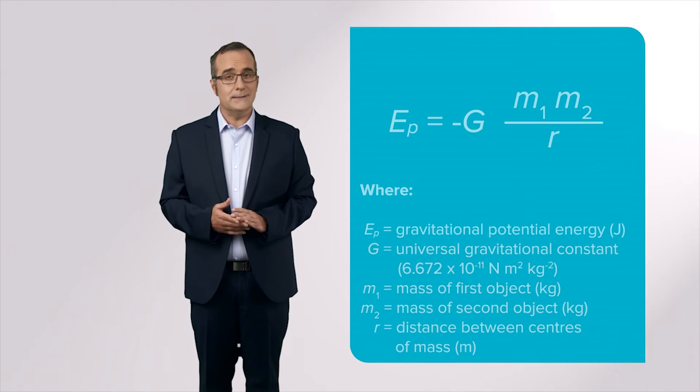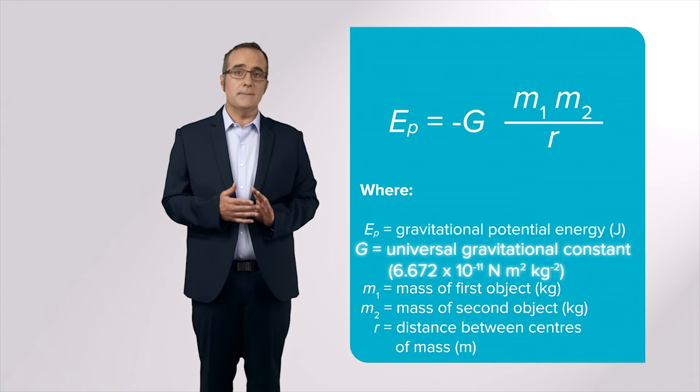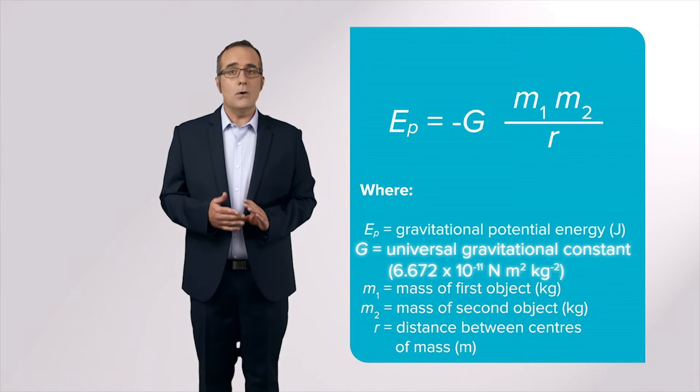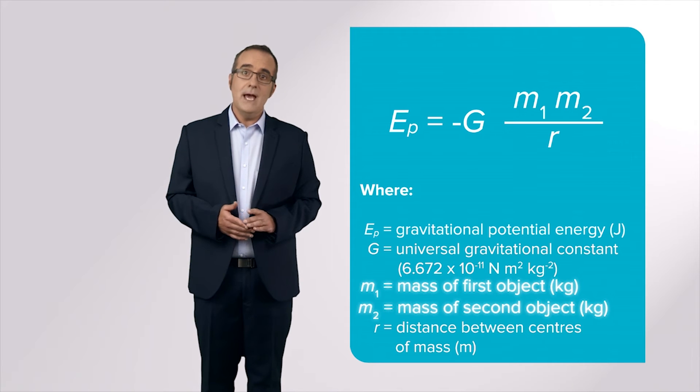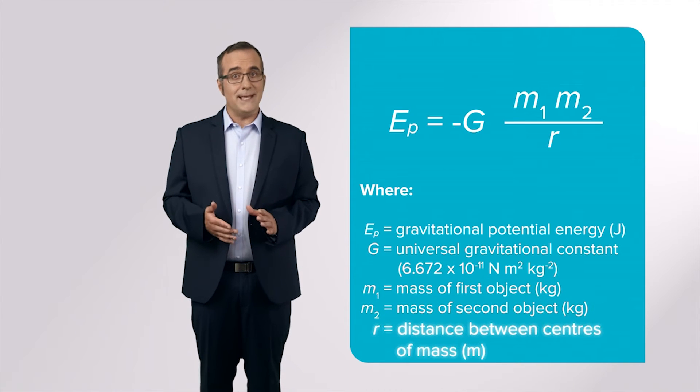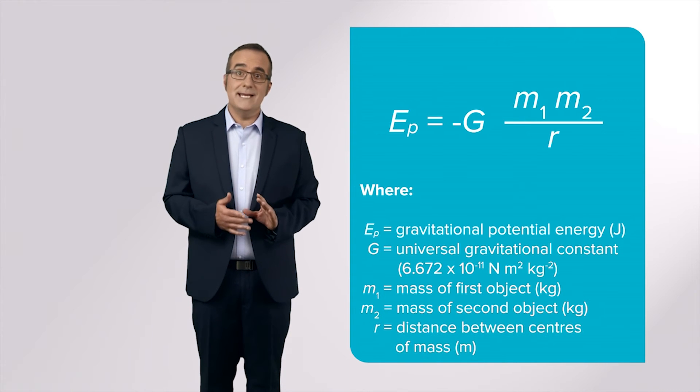The equation used for gravitational potential energy involves the universal gravitational constant G, 6.672 times 10 to the power of minus 11, multiplied by the masses of both objects in kilograms, divided by the distance between them, measured in metres. There is always a negative sign.